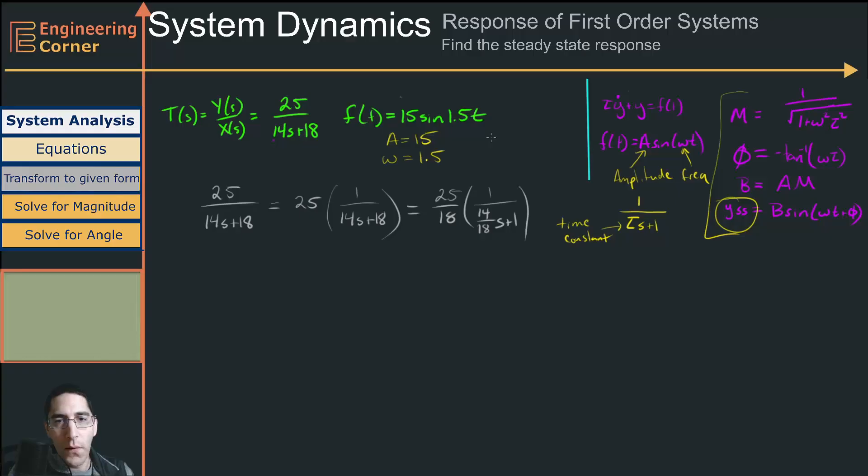So in this form, our time constant tau is going to be equal to 14 over 18, which is going to be equal to 7 over 9.